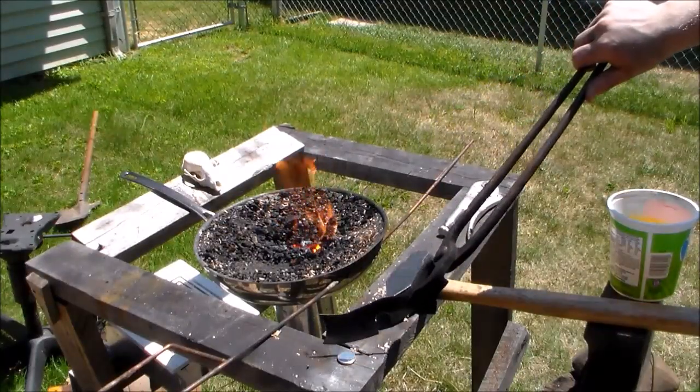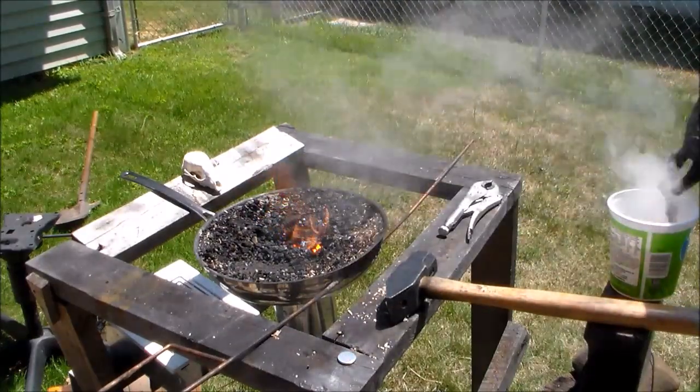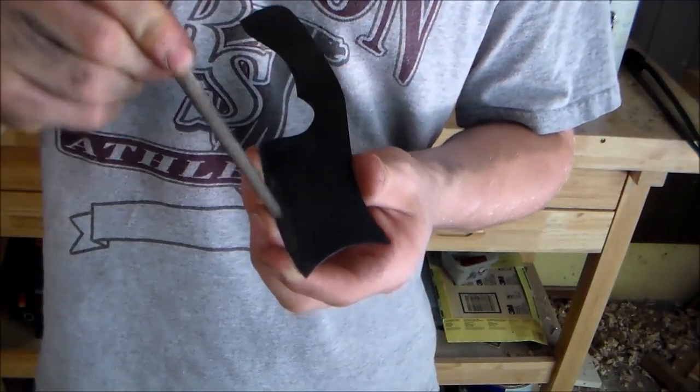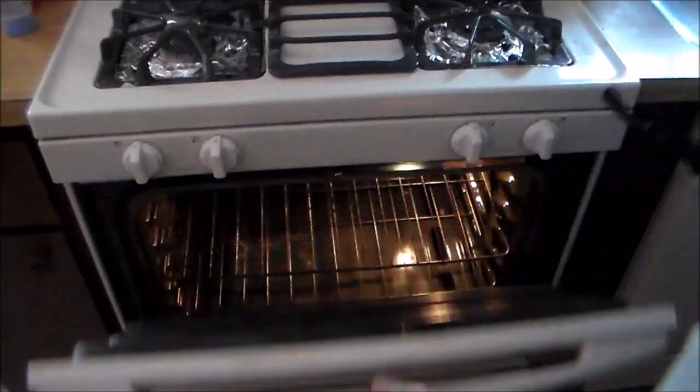To harden the blade, we'll heat it up until it no longer sticks to a magnet and quench it in oil. And here you can see that the file skates over the edge and it kind of digs in towards the handle, which means the hardening process was successful.